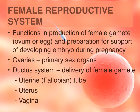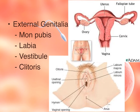The ovaries are the main primary sex organ in the female. Just like in males, there is a duct system as a delivery system for the female gamete, which includes the uterine or fallopian tube, the uterus, and the vagina. The external genitalia include the mons pubis, the labia, the vestibule, and the clitoris.